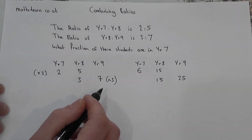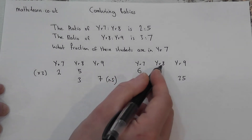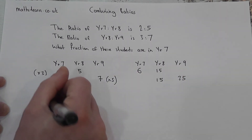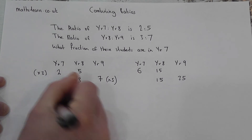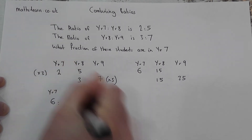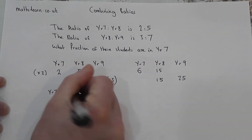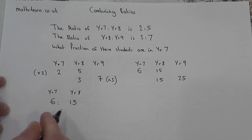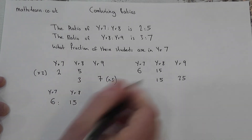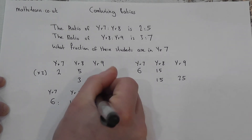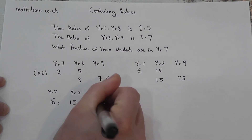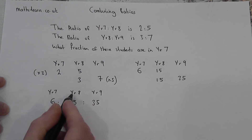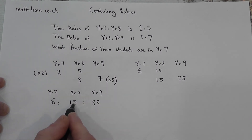This means the ratio of Year 7 to Year 8 to Year 9 is as follows: for every 6 in Year 7 there are 15 in Year 8, and for every 15 in Year 8 there are 35 in Year 9. So the ratio of Year 7 to Year 8 to Year 9 is 6:15:35.